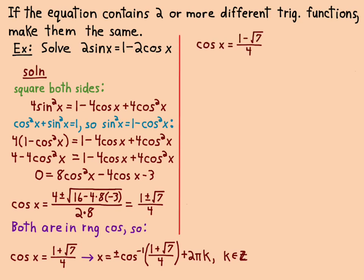Or x = ± cos⁻¹((1 - √7)/4) + 2πk. That was the one for the plus. Then the one with the minus square root of 7, you get the same thing, only with the minus square root of 7. So that's four different answers.